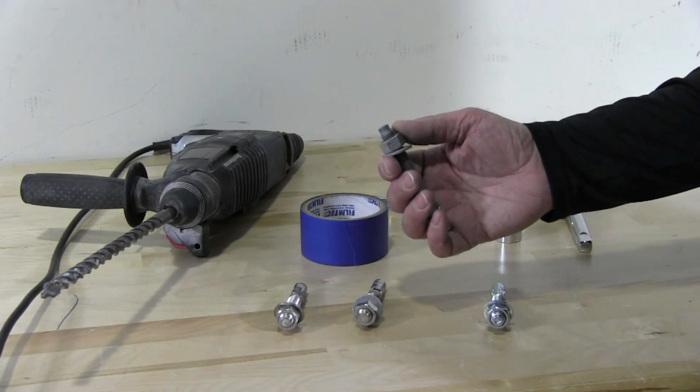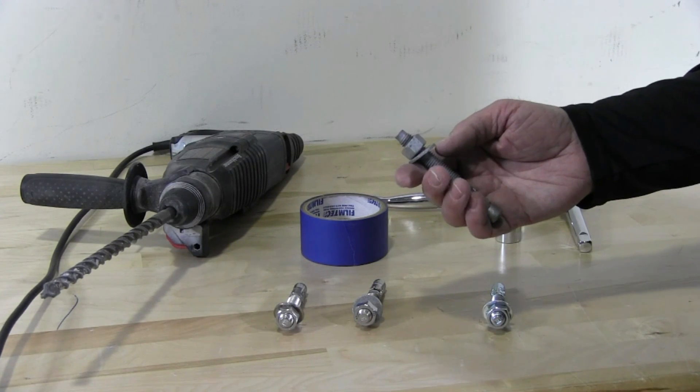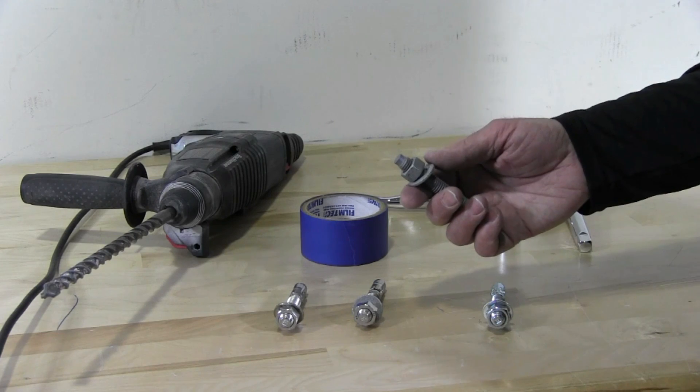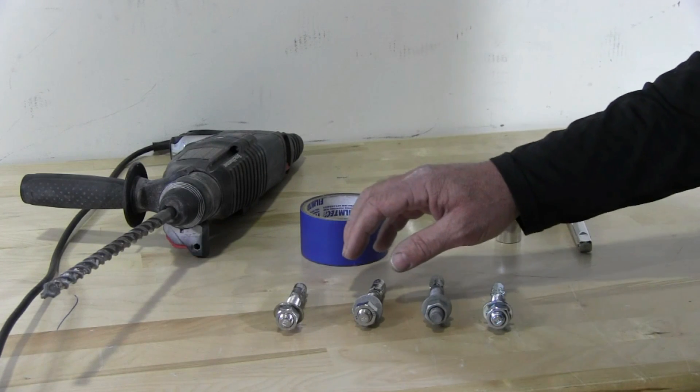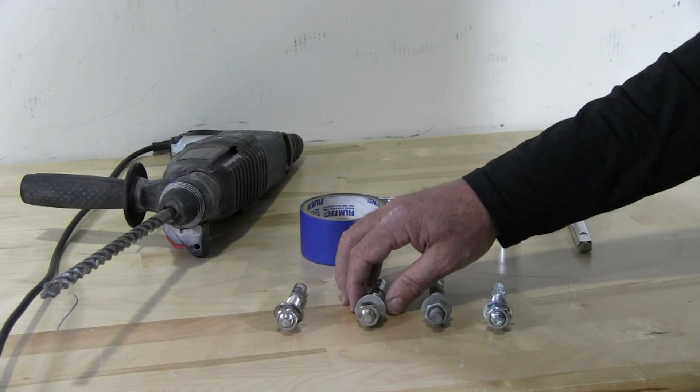Hot dip galvanized wedge anchors are used for exterior applications in fresh water such as rain water, bay water, anything where you are using it in a non-salt water application.